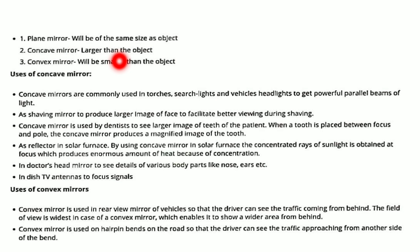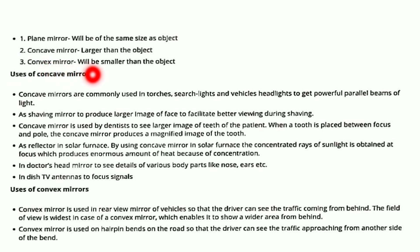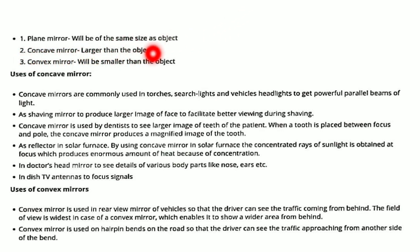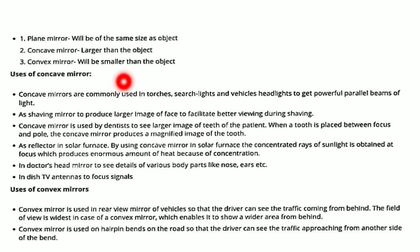The second type is the concave mirror, which is a converging mirror. The image formed by a concave mirror will be larger than the object. The third type is the convex mirror, where the image formed will be smaller than the object. So these three points we must remember: plane mirror gives same-size image, concave mirror gives a larger image, and convex mirror gives a smaller image.